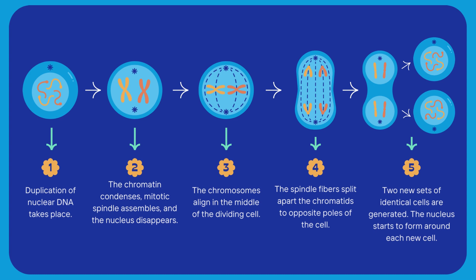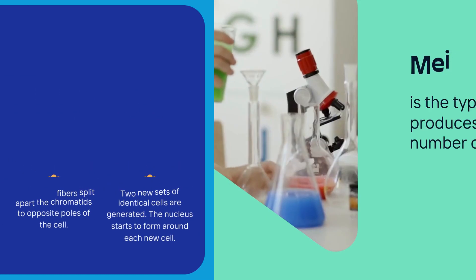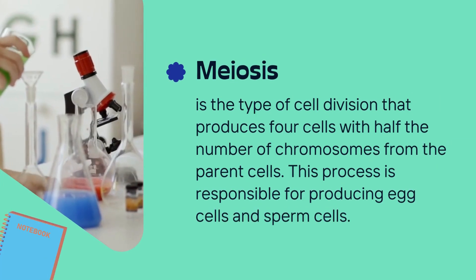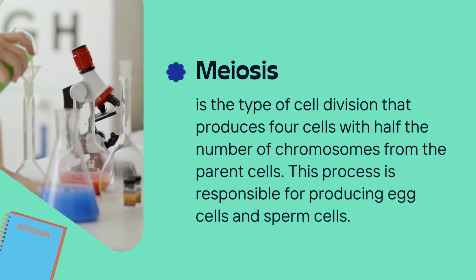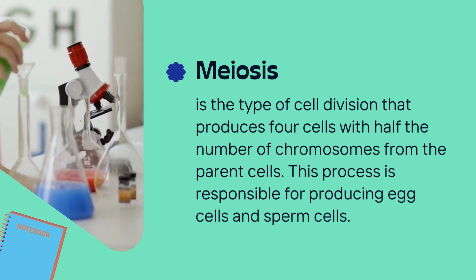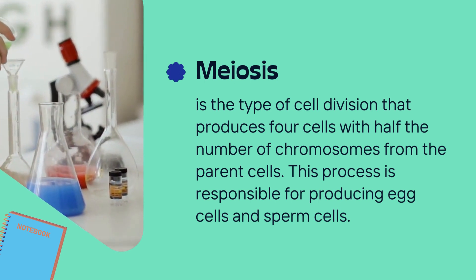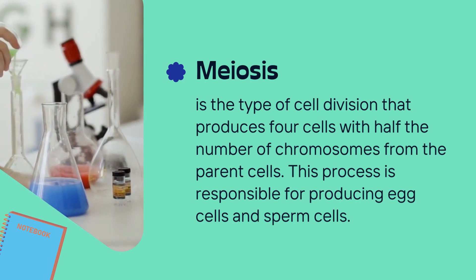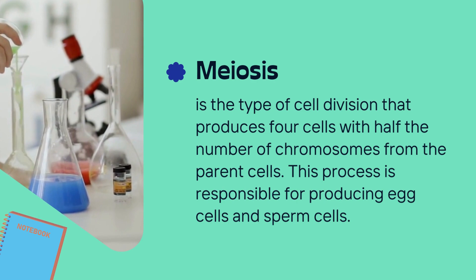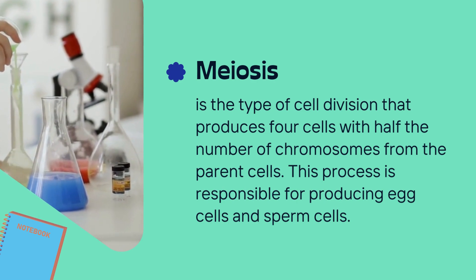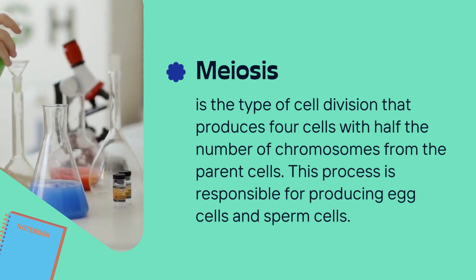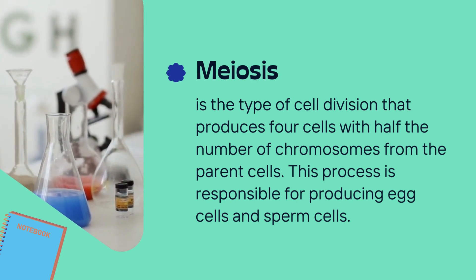The nucleus starts to form around each new cell. 6. Meiosis is the type of cell division that produces four cells with half the number of chromosomes from the parent cells. This process is responsible for producing egg cells and sperm cells.